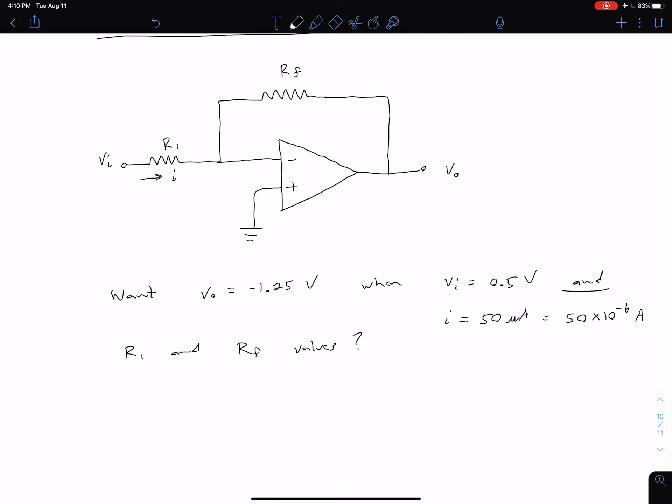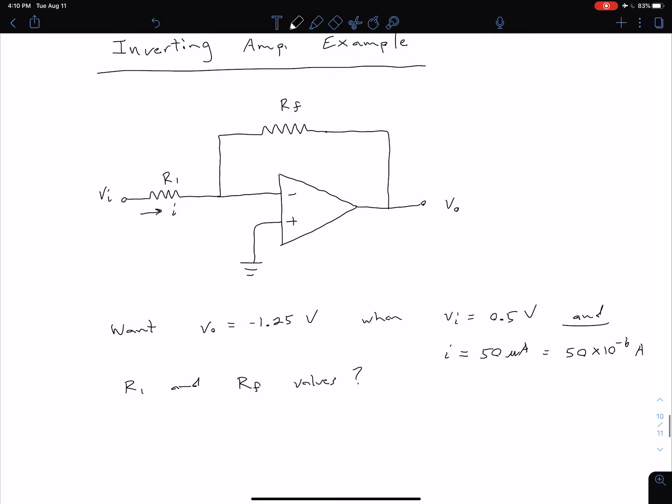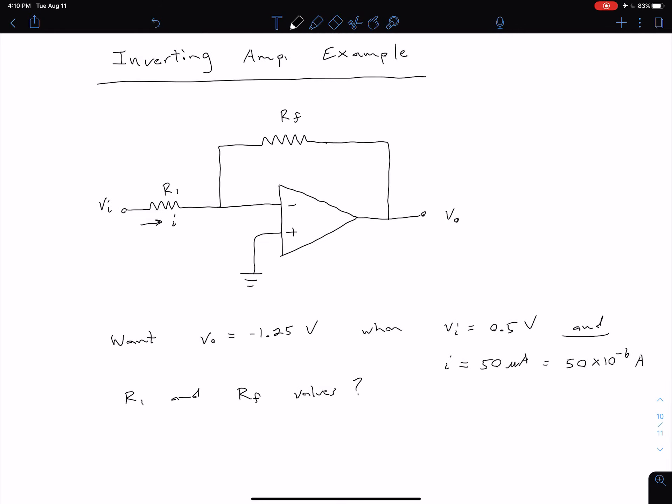And so because we've already analyzed our general configuration for the inverting configuration, we don't have to go back to square one with our ideal op-amp analysis. We could just start with that equation.